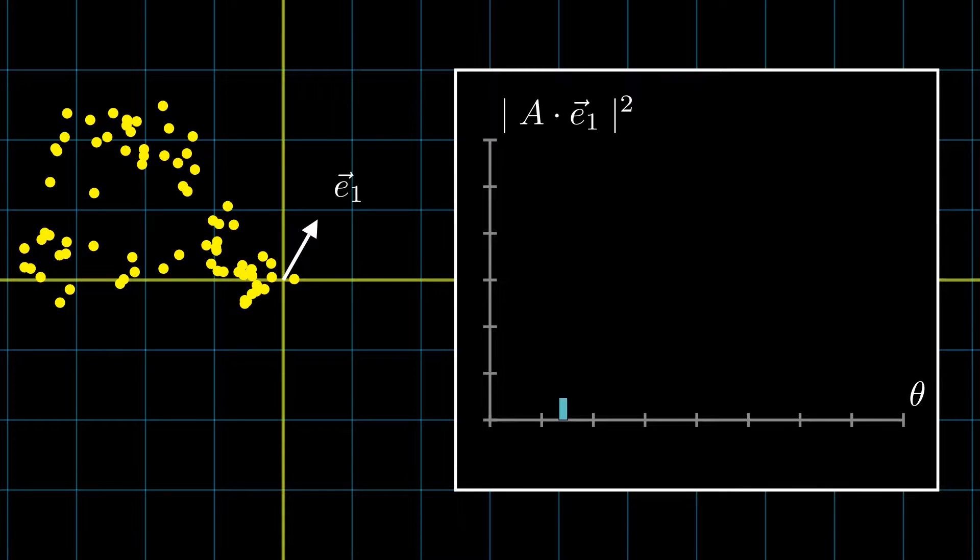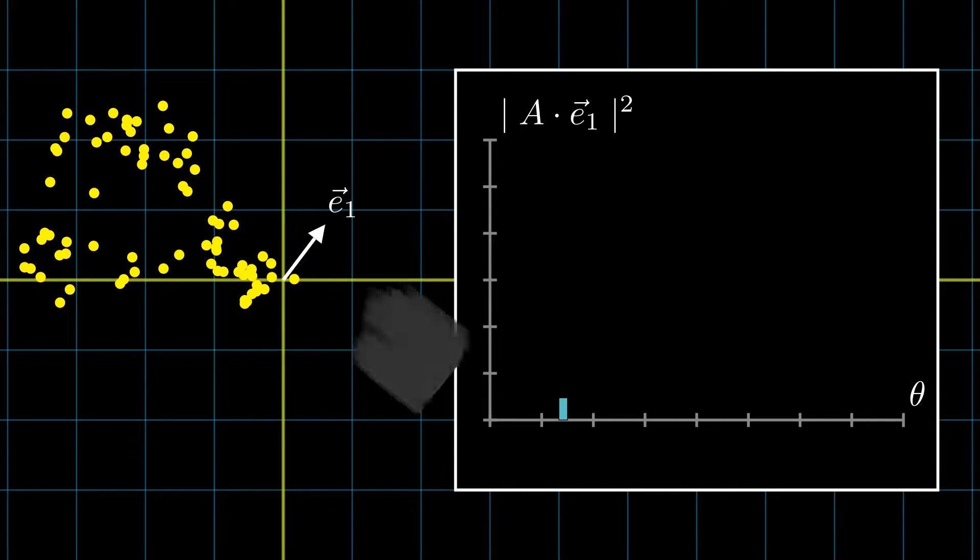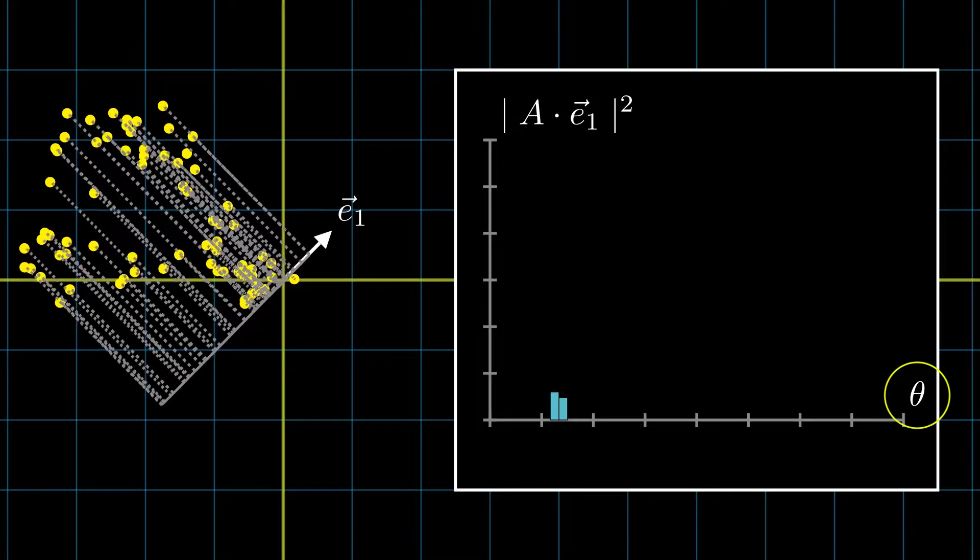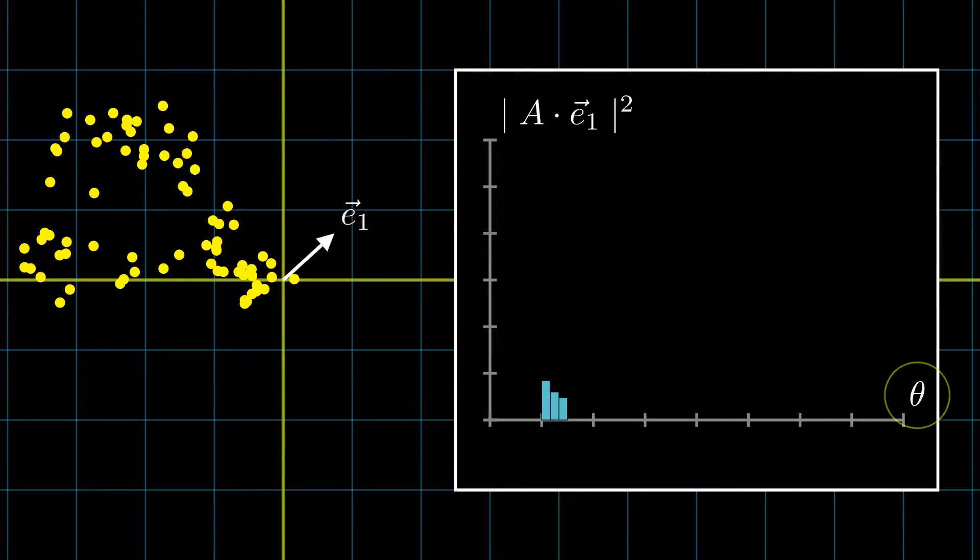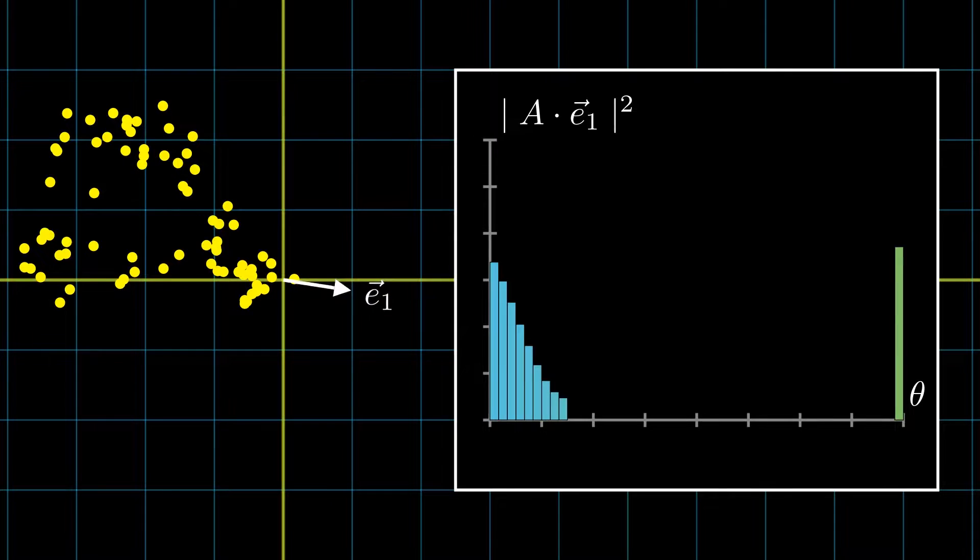This will give us a number to work with which is actually the norm of the dot product between the data matrix A and this tentative eigenvector E1. Now we want to do that for every possible eigenvector in this 2D space and in 2D we can plot this overall norm as a function of the eigenvector of angle theta with respect to the origin. For higher dimensional data plotting this function might not be very simple though.